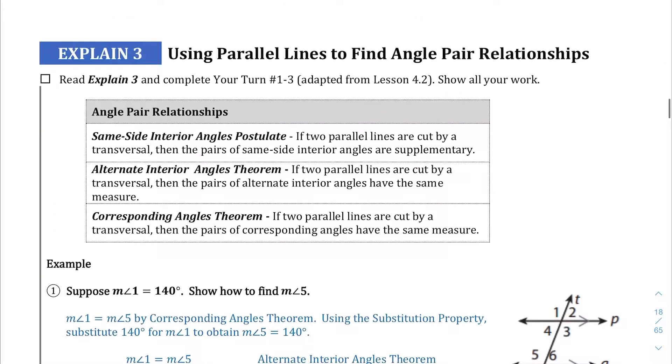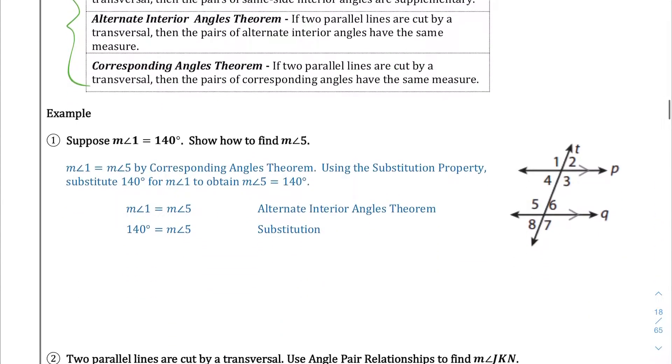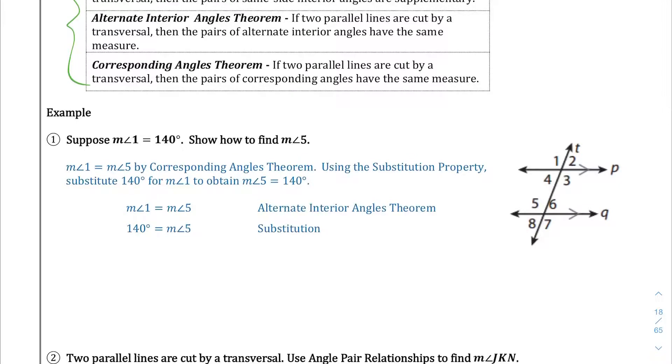Let's move on to the explain 3 section. We're going to use parallel lines to find angle pair relationships. They're all the same relationships that we've covered: same side interior, alternate interior, corresponding angles theorem. What we're trying to do is, given the fact that these two lines are parallel, P and Q are parallel, and we are given one of the angles, angle 1 is 140, they want us to find what is angle 5.